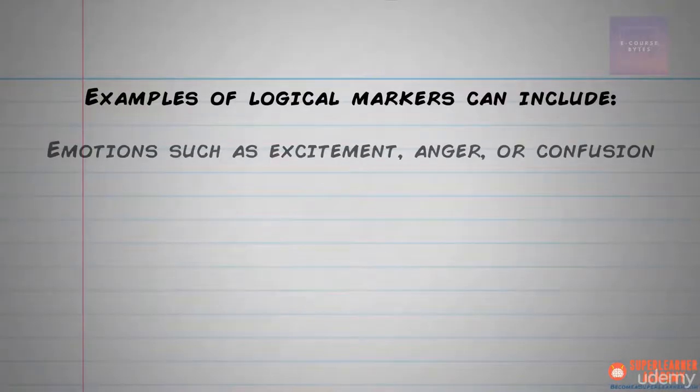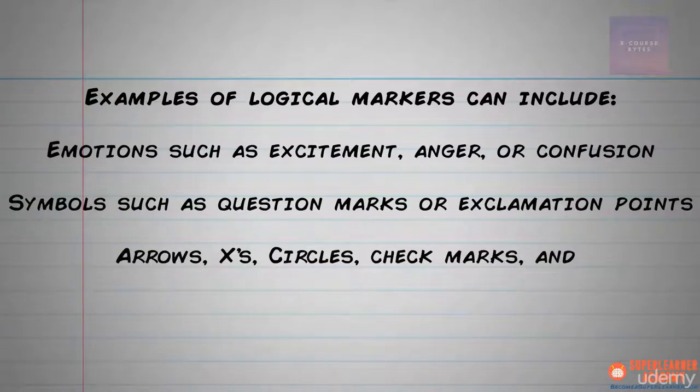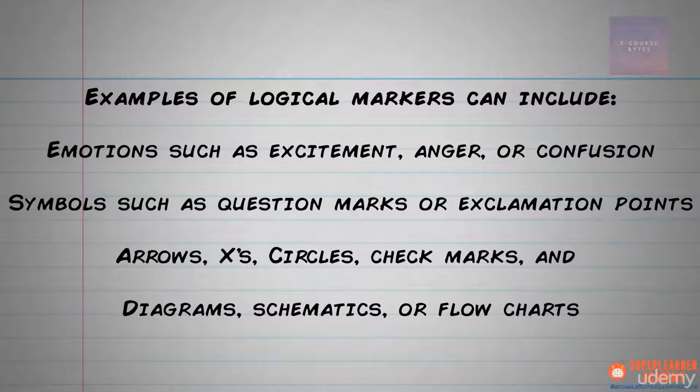Logical markers may be something as simple as a negative emotion of anger between Austria-Hungary and Serbia, or as complex as a schematic that explains all the interactions between all the different warring nations. Examples of logical markers can include emotions such as excitement, anger, or confusion; symbols such as question marks or exclamation points; arrows, x's, circles, and check marks; and even diagrams, schematics, or flowcharts.